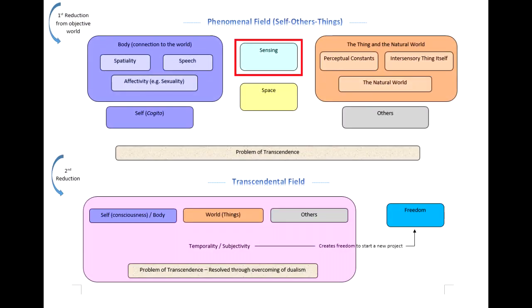Moving down to space: space is derived from treating my body as a system for possible actions, so action is central. What Merleau-Ponty says is that space is the means by which position becomes possible — it's really a way of allowing us to orient ourselves in the world. This happens primarily through action, through our bodies and the actions we're able to carry out in the world.